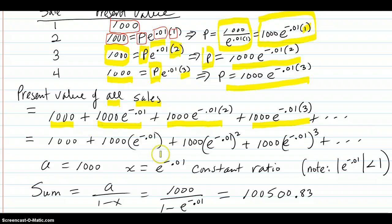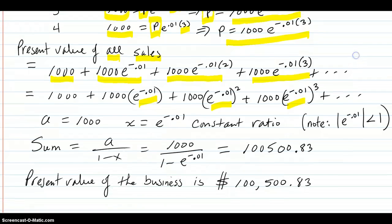All they've done here is algebraically highlight the fact that the constant ratio is e to the negative 0.01. That's the constant ratio. So according to our formula, the x is e to the negative 0.01, and that's a constant ratio.